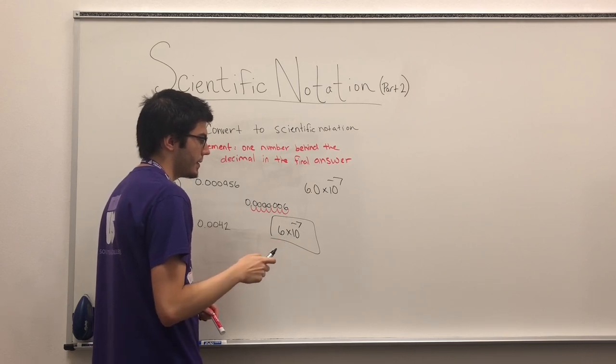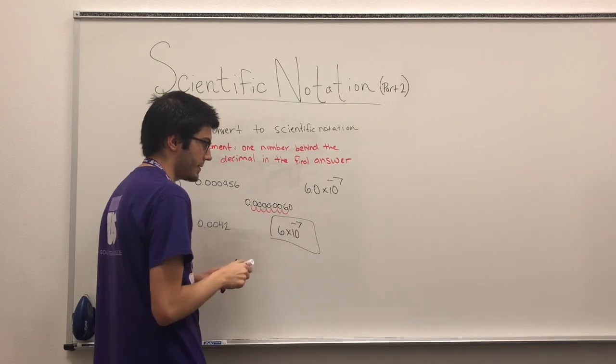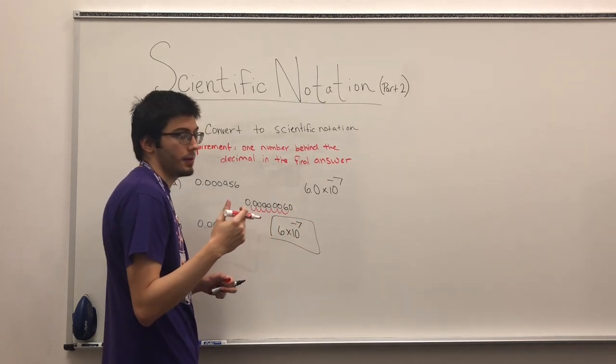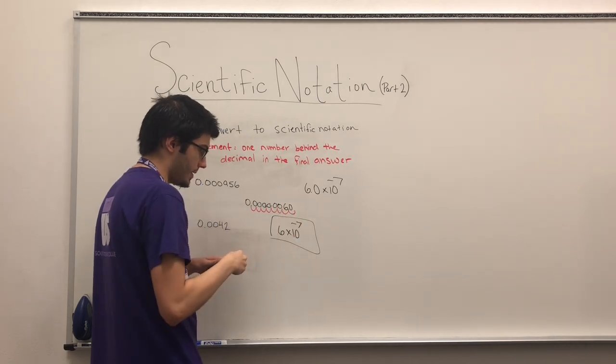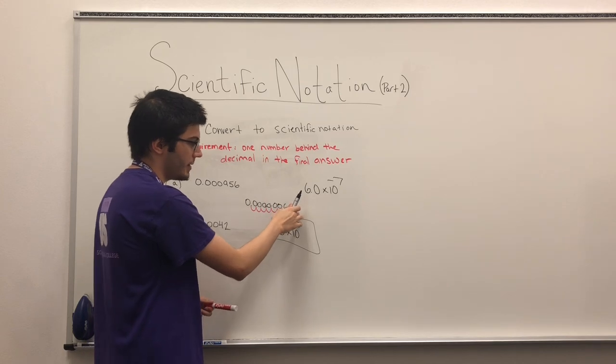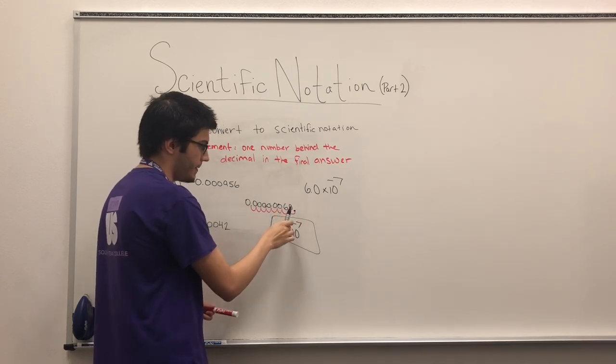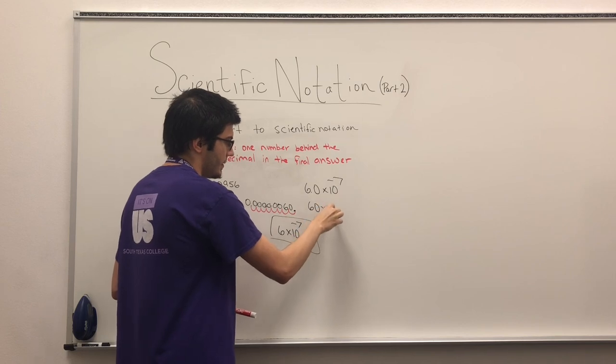And not, like if I add another zero here, that doesn't change the value. All right, but if I do that, then I'm counting eight. And so I would place the decimal there. So I would be at 60 times ten to the negative eight.